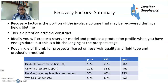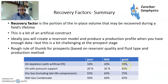To sum up: recovery factors are a portion of the in-place volume that can be recovered in a field lifetime. It's an artificial construct — you can't measure it, it's a ratio of two numbers. Ideally you'd create a reservoir model and produce a production profile when you have enough data, but at the prospect stage you need a range of numbers for economic decisions, so you use a recovery factor built from analogues. As a rough rule of thumb: oil depletion — poor 10%, mid 20%, good 30%; pressure support — poor 20%, mid 35%, good 45%; dry gas — 55%, 65%, 75%; wet gas condensate — 50%, 60%, 65%.